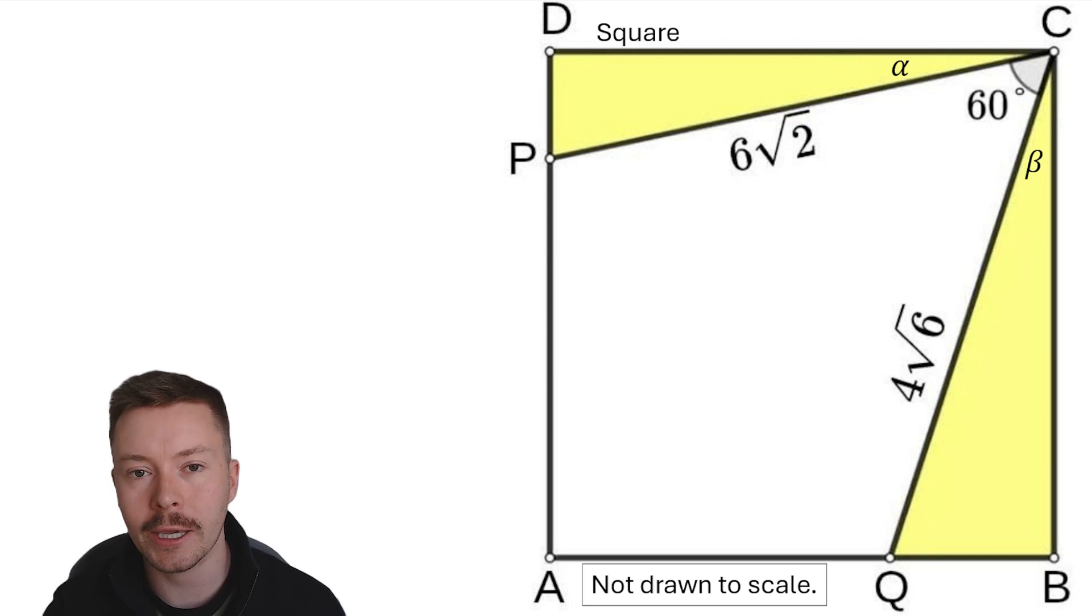From there, I can put beta in terms of alpha, because I could do 90 take away 60 take away alpha. That can simplify to give us 30 minus alpha.